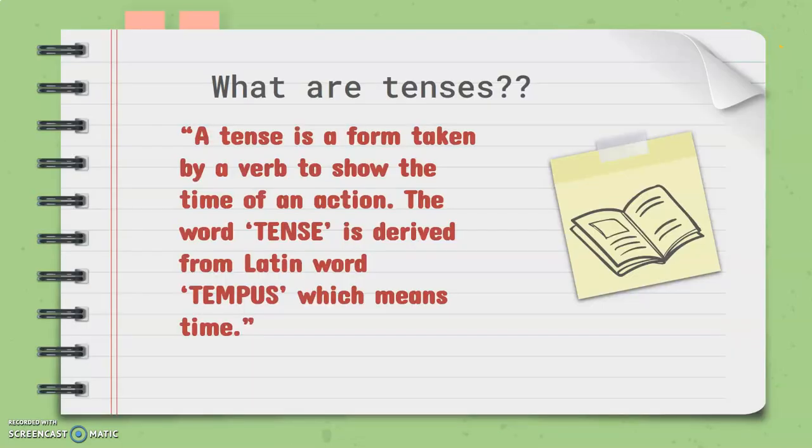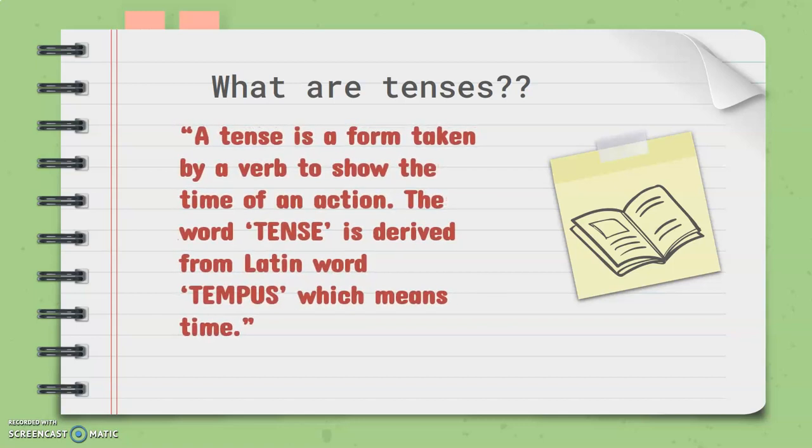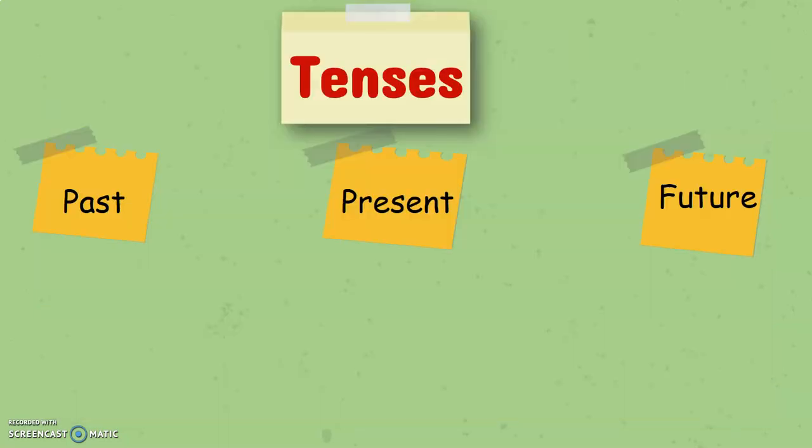Let's head to the definition now. What are tenses? Tenses is a form taken by a verb to show the time of an action. The word tenses is derived from a Latin word 'tempus' which means time. Now, tenses are divided into three parts: the present, the past, and the future. Let's see the sub-parts of each.